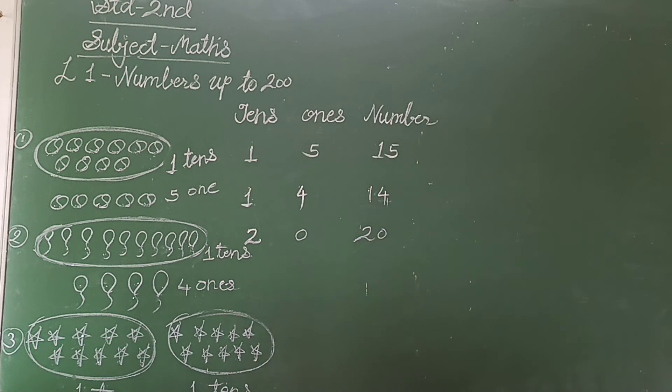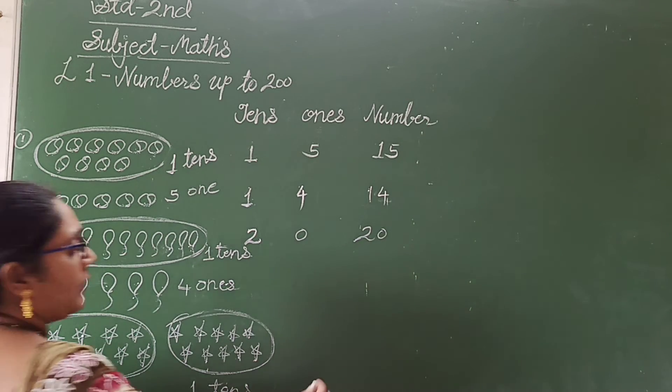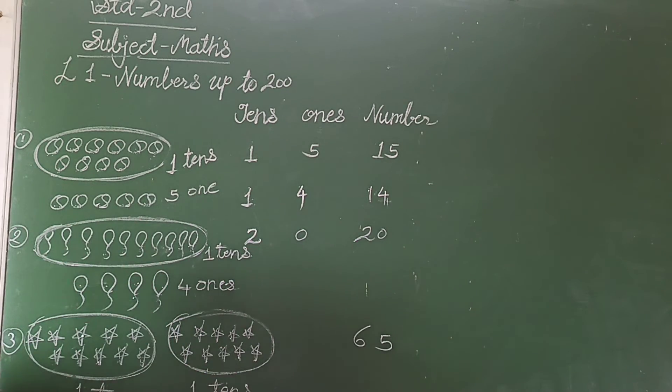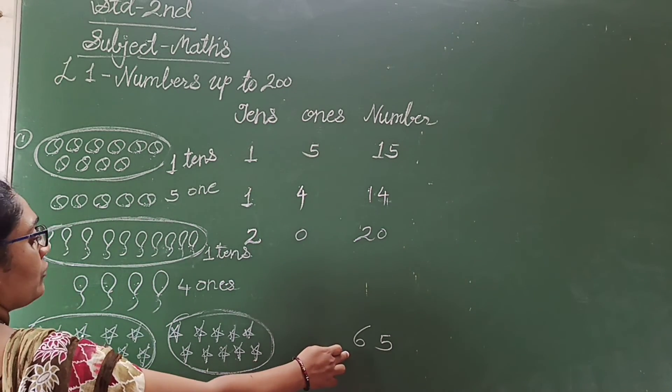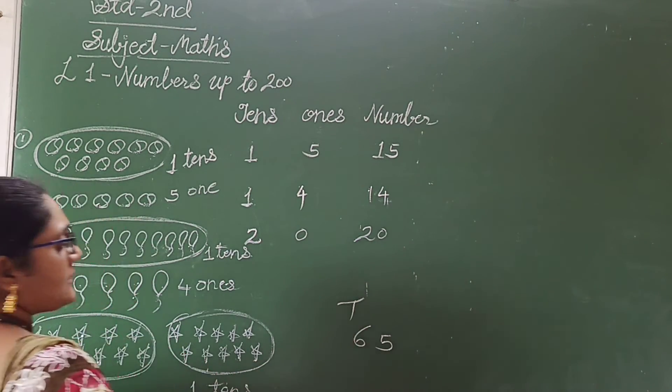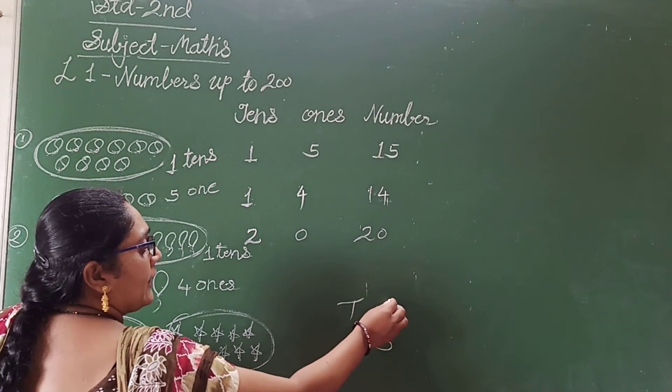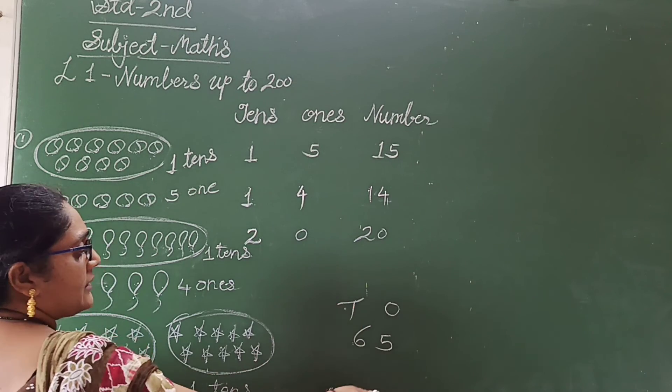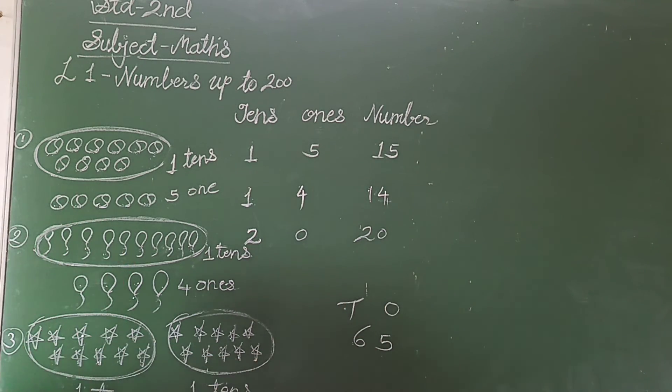At last you remember that first digit you have to write in 10th place. And second digit you have to write in 1st place. Means 6, 10 and 5, 1s. I hope all are understand this topic.